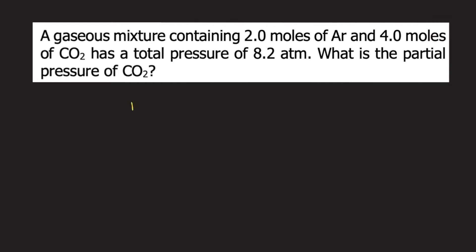If you want to calculate the partial pressure of a gas, the formula is the mole fraction of the gas — the symbol is the Greek letter chi, so chi-gas — times the total pressure, P-total.